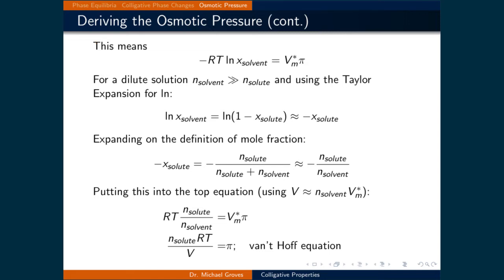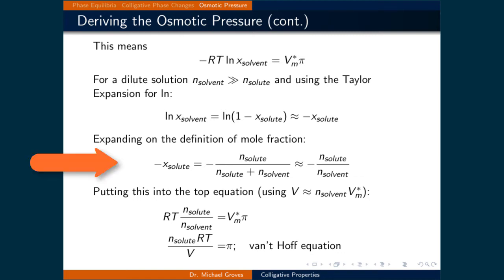We will now make a few assumptions to simplify this expression. We will use a Taylor expansion of the natural logarithm, which is almost exact for very small values of the argument. This means that we can approximate the natural logarithm of the mole fraction of the solvent as minus one times the mole fraction of the solute. We will assume that the solution remains dilute, meaning that the number of moles of the solvent will be much, much larger than the number of moles of the solute.